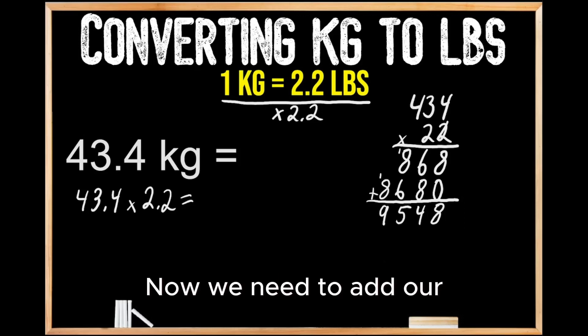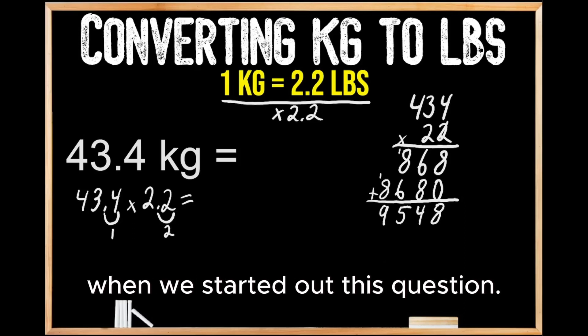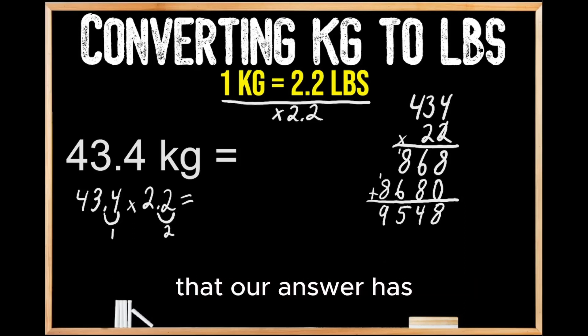Now we need to add our decimal back into our answer. As we can see here in our original problem, we had 1 digit and 2 digits to the right of the decimal place when we started out this question. So we need to make sure that our answer has 2 digits to the right of the decimal place, which just happens to lie between the 5 and the 4.